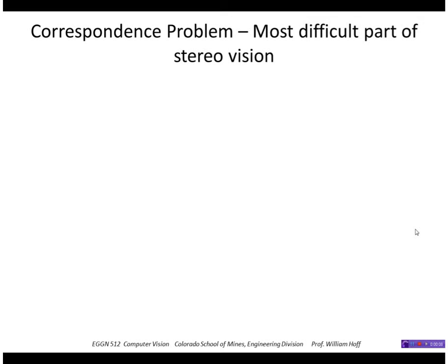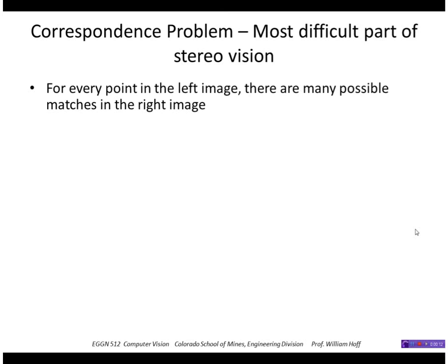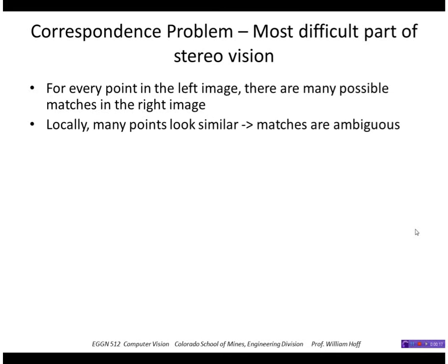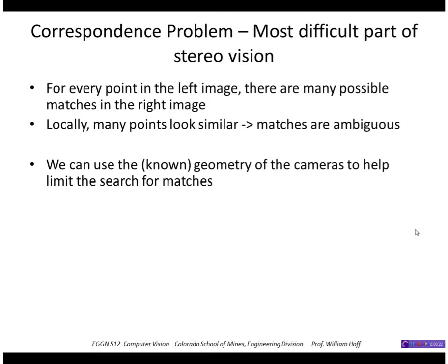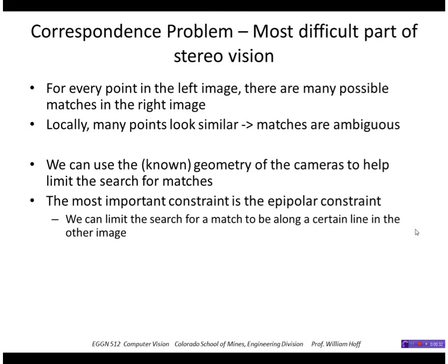Let's look again at the correspondence problem, which is the most difficult part of stereo vision. For every point in the left image, there are many possible matches in the right image. The problem is difficult because the points look similar, so we have ambiguous matches. One way to help solve this is to use the known geometry of the cameras to limit the search for matches. The most important constraint is the epipolar constraint, meaning we can limit the search for a match to be along a line in the other image — we don't have to search the entire image.